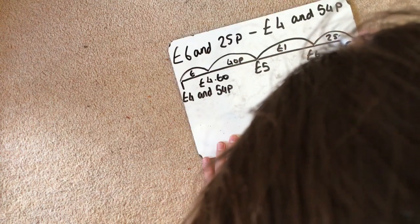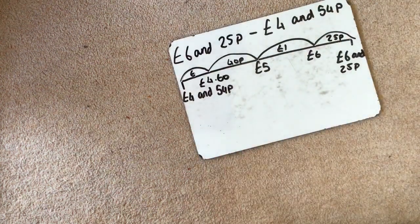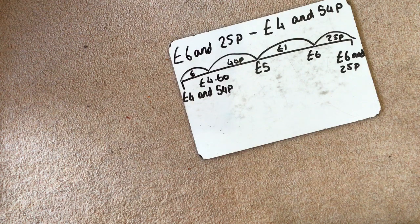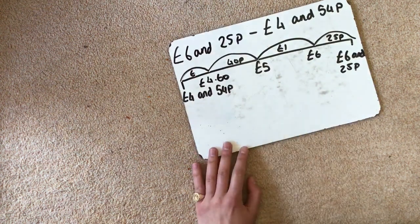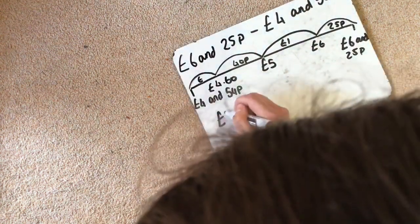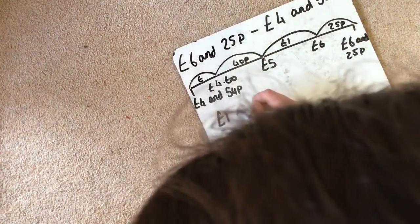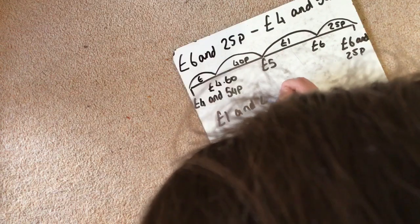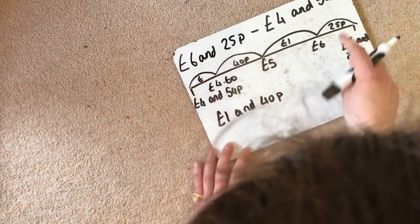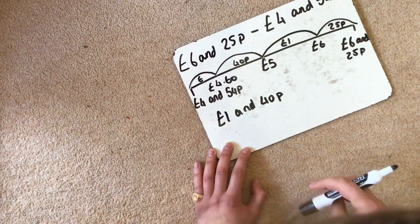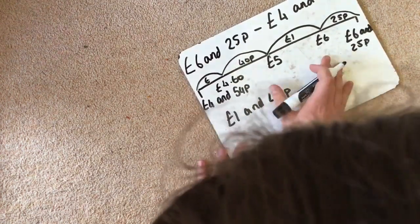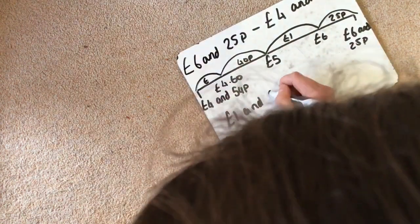The next step is to add them all together. So I'm going to start with my biggest number. So we've got £1. And then I'm going to add 40p onto that. So I know that's £1.40. Then I'm going to add my 25p. So that becomes £1.65.